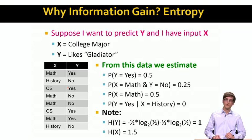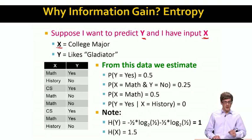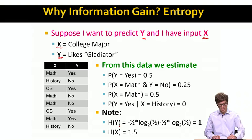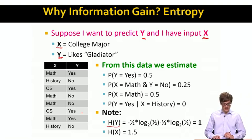Now that we have the concept of entropy, let me give you an example. Imagine that I want to predict value y, but I'm given input x. In particular, imagine that x is the college major and y is whether the person likes Gladiator or not. So my data is a set of x, y pairs where x is the major and y is whether the person likes Gladiator or not. We can ask what are some entropies in this case — for example, what is the entropy of y? My y takes two values: yes or no.